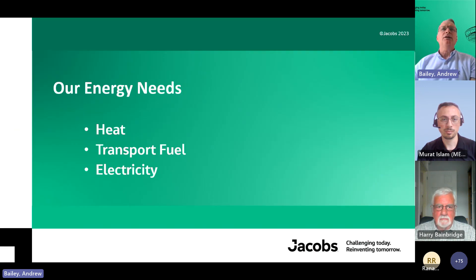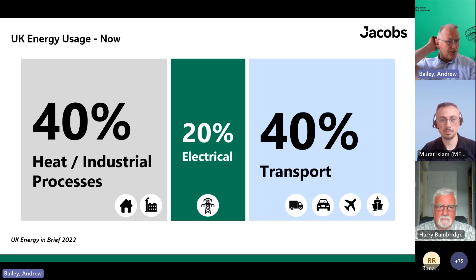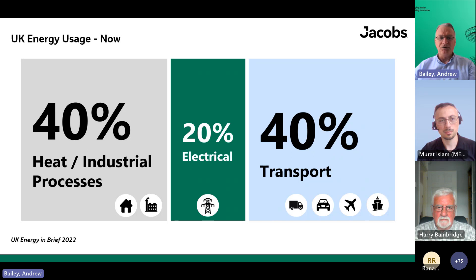We have a need in the UK, as in all other countries, for heat, transportation, fuel and electricity. If I asked you how much of our energy is actually electricity, most people give a much higher number than the 20% shown. The reality is that in the UK, about 17% of our energy is electrical. The rest is heat, industrial processes and transportation.